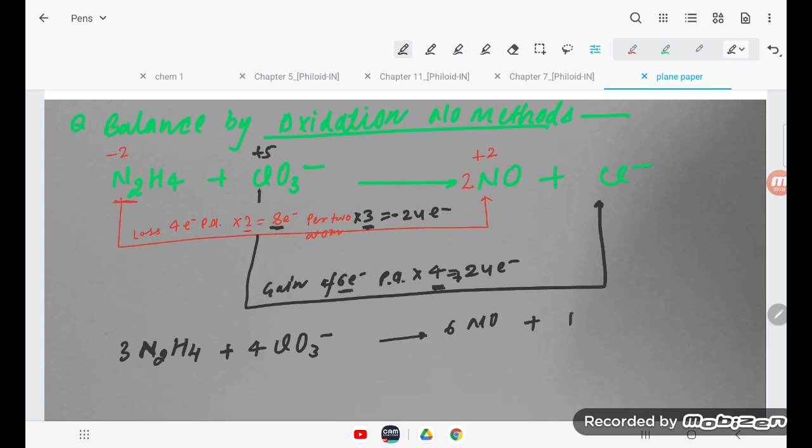Now how do we balance the oxygen and hydrogen? Oxygen by H2O, hydrogen by H plus. This is the rule of acidic medium. Oxygen we balance by adding H2O and hydrogen by H plus. So when you see oxygen, how much are there? 4 times 3 is 12. And here how many are there? 6. So how many water are required here? That is 6 H2O. And hydrogen you see, here is 12 and here is 3 times 4 is 12. So it means as a whole this equation is already balanced.